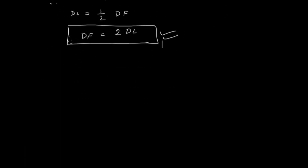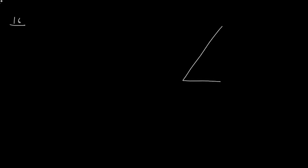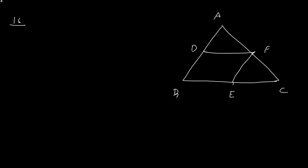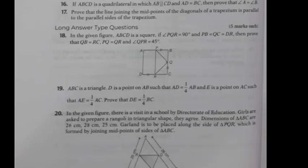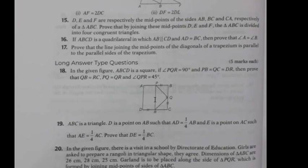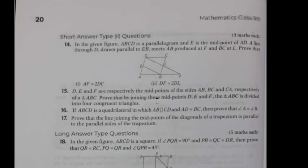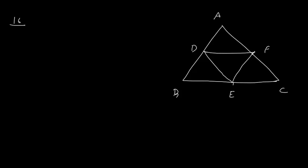Prove that joining the midpoints D, E, F of triangle ABC divides it into 4 congruent triangles. We will take triangle ABC and then DEF. Now we have 4 triangles and we have to prove that all these 4 triangles are congruent.